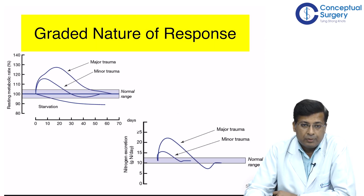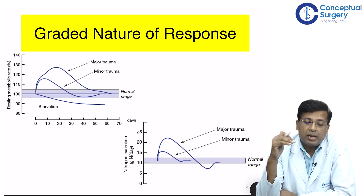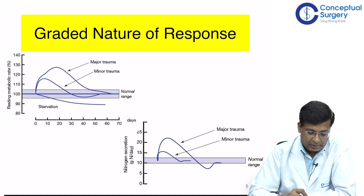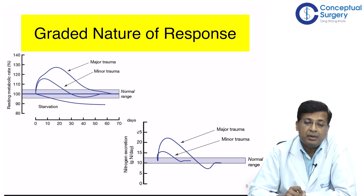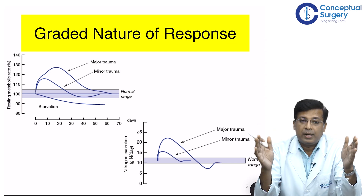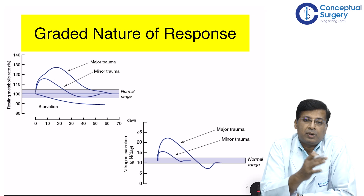The response of the body to any injury or insult is dependent on the severity of the injury. Looking at two graphs — major trauma and minor trauma — there are two things to observe: it is not only the peak which is different, but also the timeline. In major trauma, not only does the metabolic rate achieve a higher peak, but the area under the curve is much wider, meaning the body takes much longer to return to a normal state after major trauma than after minor trauma.